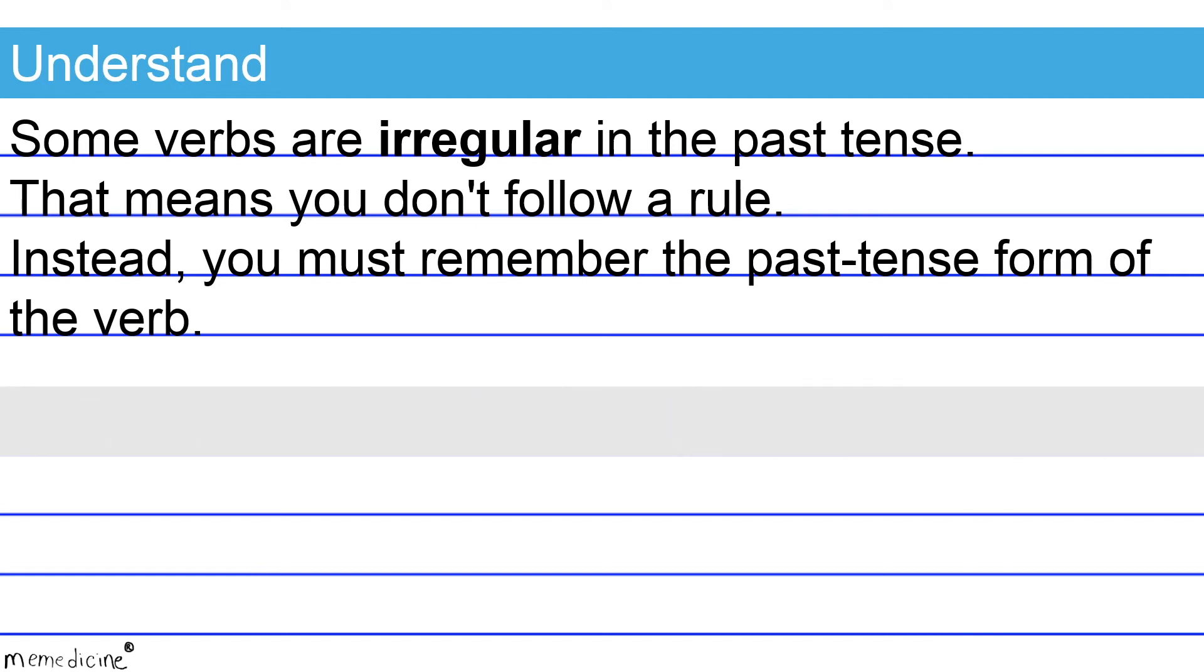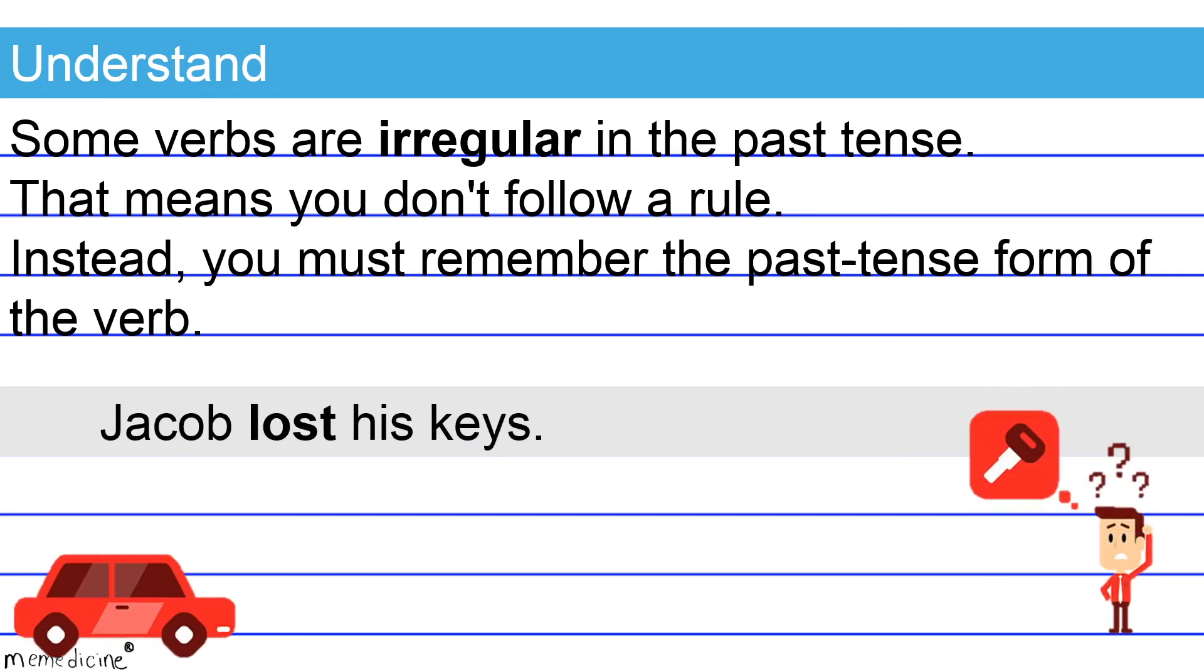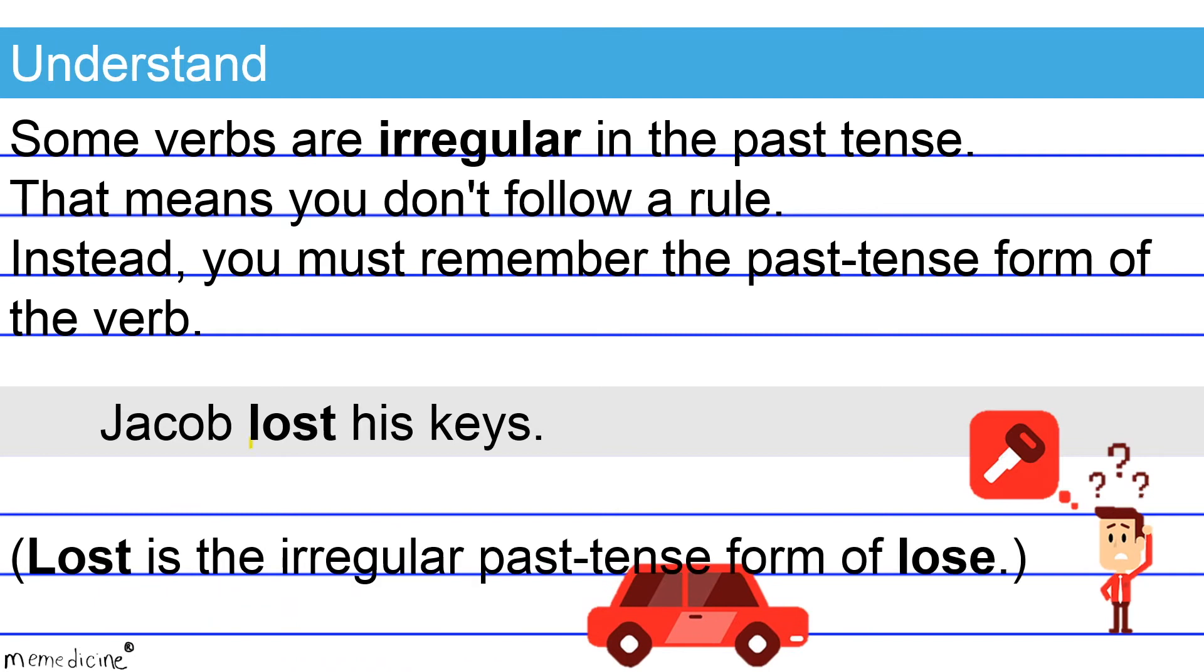Check out this example. Jacob lost his keys. Lost is the irregular past tense form of the verb lose. This is a correct shift and the overall sentence is formatted correctly.